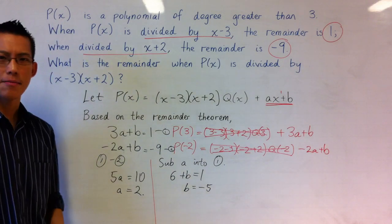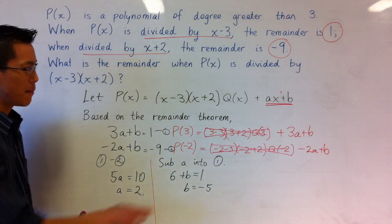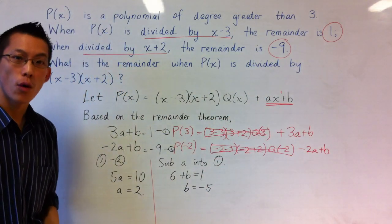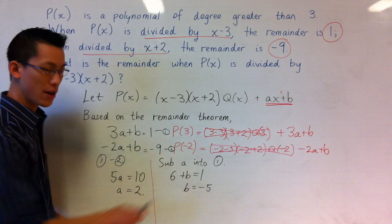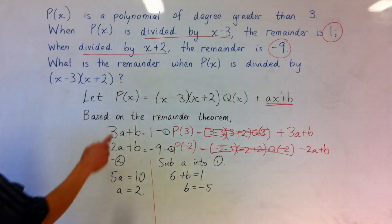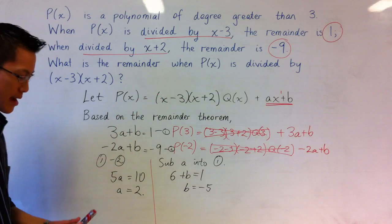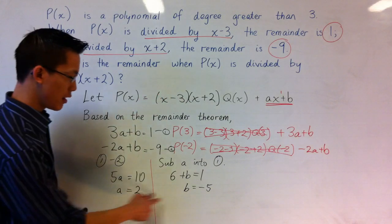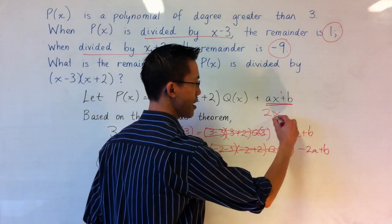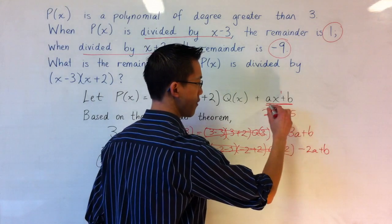Now why are we finding what a and b were? Well if you remember back up here, a and b will give us the actual values for the remainder. So now having found what they're equal to, we now have our solution staring at us. The remainder was ax plus b, but we found a to be 2, and b to be minus 5. So that means that the remainder we want is 2x minus 5.